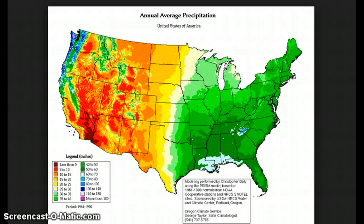Just to recap really quickly: the warmer the ocean current is, the warmer your temperature will be. The warmer the ocean current is, the more precipitation you will have.